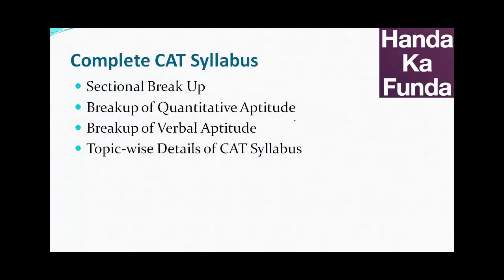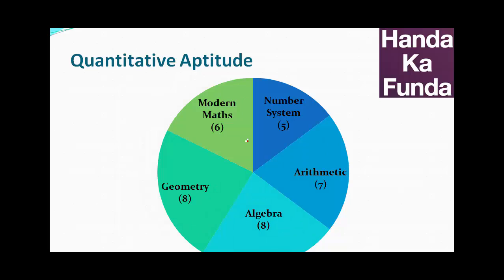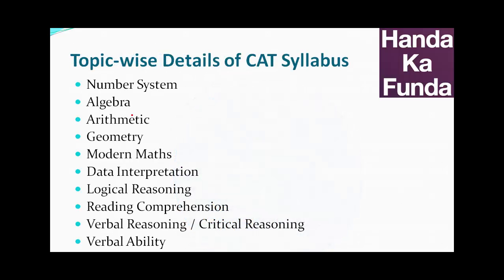In the first video, we talked about what is the sectional breakup, what was the breakup of the quantitative aptitude portion, what was the breakup of the verbal aptitude portion and we discussed all of that in great amount of detail. So if you haven't seen that video, I would suggest you watch that first and then come to this one. And what are we going to do in this particular video? We will be talking about one of the topics in great amount of detail and that topic for today is number system.